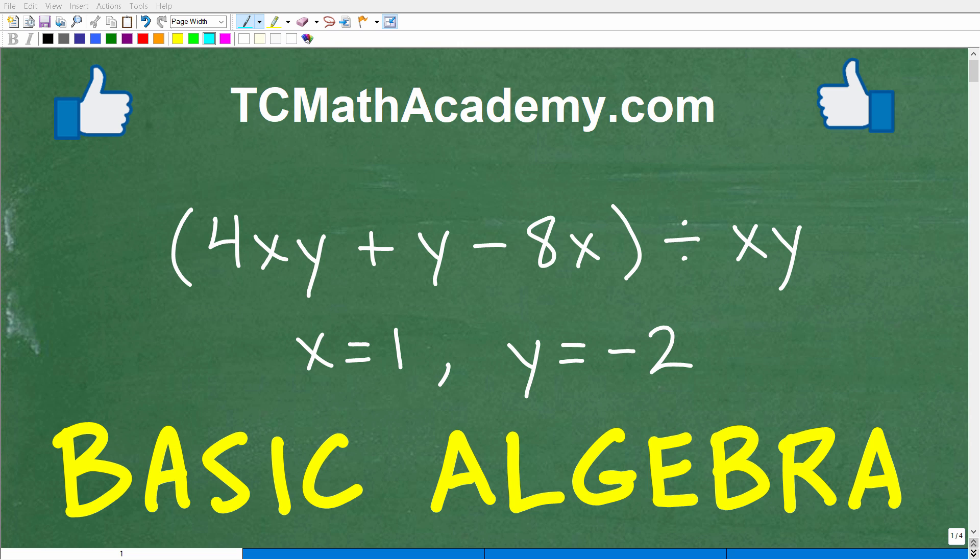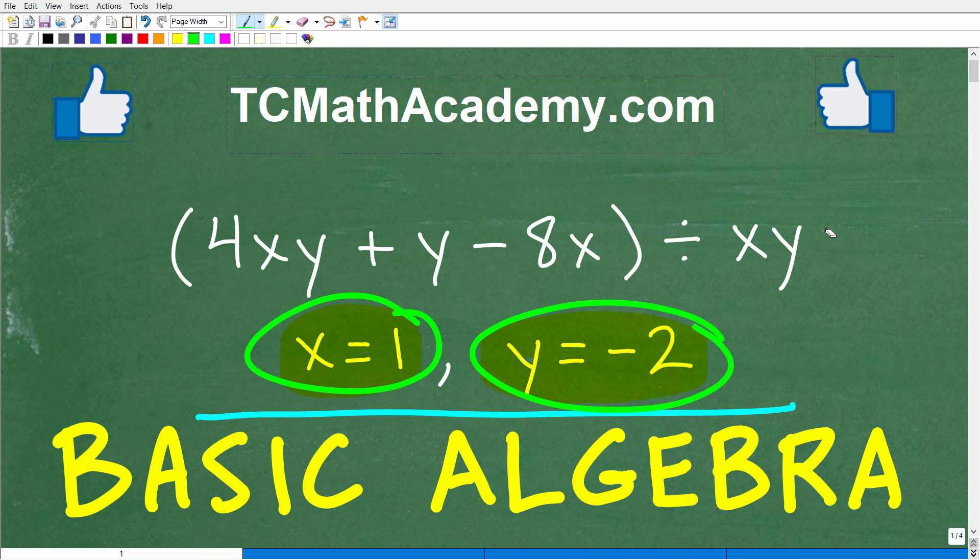Okay, so let's see how strong your basic algebra skills are by taking on this problem right here without the aid of a calculator. And what is the problem? Well, the problem is the following. We have this algebraic or variable expression and it's parentheses 4xy plus y minus 8x and parentheses divided by xy. And we want to evaluate this for the values x equals 1 and y is equal to negative 2. So this kind of question on a test or textbook would be something like evaluate the expression for the following values.